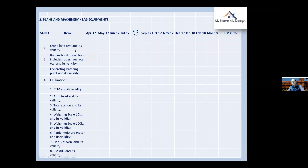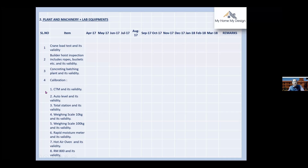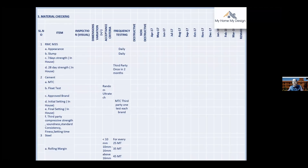Calibration is important for: compression testing machine, mixing machine, auto level controller, total station, weighing scales (10kg and 100kg), rapid moisture meter, hot air oven, and ARM 800 — all with validity dates. This material checking chapter is a favorite — each and every material for the project must be examined through testing. After testing parameters are satisfied, only then can the material be accepted. The quality engineer has every right to reject material not meeting quality standards.